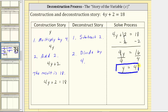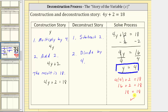Let's check this by substituting four for y in the original equation to make sure it satisfies the equation. If we substitute four for y, we have four times four plus two equals 18. Simplifying the left side, four times four is equal to 16, and 16 plus two is equal to 18. 18 equals 18 is true, which verifies our solution is correct. I hope you found this helpful.